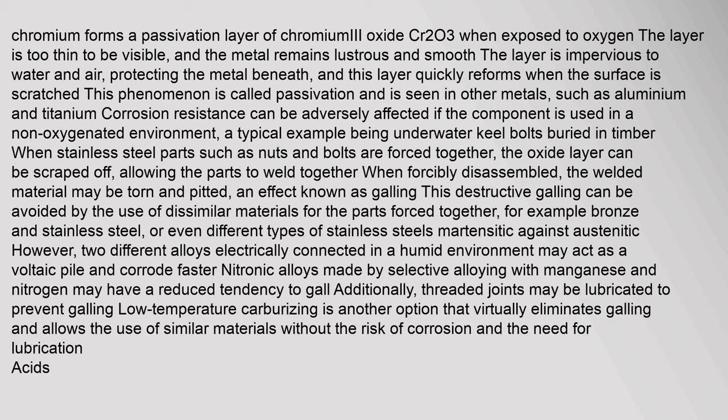Corrosion resistance can be adversely affected if the component is used in a non-oxygenated environment, such as underwater keel bolts buried in timber. When stainless steel parts such as nuts and bolts are forced together, the oxide layer can be scraped off, allowing the parts to weld together. When forcibly disassembled, the welded material may be torn and pitted — an effect known as galling. This destructive galling can be avoided by using dissimilar materials, such as bronze and stainless steel, or even different types of stainless steels. Nitronic alloys made by selective alloying with manganese and nitrogen may have a reduced tendency to gall. Low temperature carburizing is another option that virtually eliminates galling and allows the use of similar materials without the risk of corrosion.